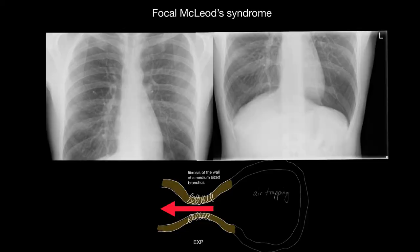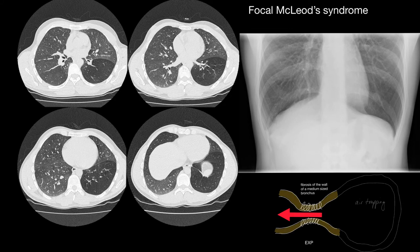Here is a case of focal McLeod syndrome. The lungs are completely normal with the exception of the left base, where there is attenuation of blood vessels — the number and size of blood vessels are reduced — and there is an area of lucency giving rise to air trapping. The CT demonstrates some bronchiectasis, attenuation of vessels in terms of number and size, and an area of air trapping. Note that the oblique fissure is bulging anteriorly because of the volume hyperexpansion in this left lower lobe.